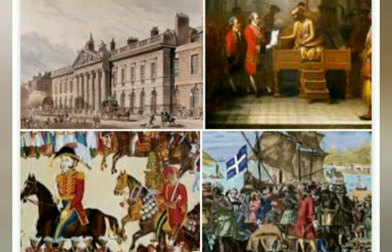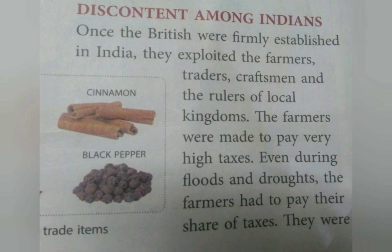There was disunity — the people were not united. A few people who were not honest and loyal to their country helped the British, and this helped them in conquering large parts of India and establishing their rule. Once firmly established, the British started exploiting the farmers, traders, craftsmen and the rulers of local kingdoms. The people started becoming angry.